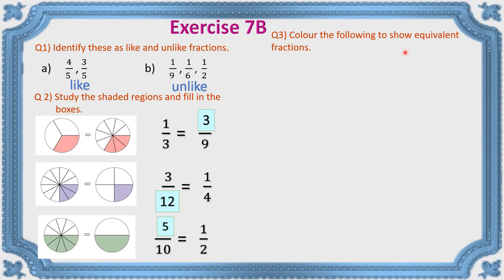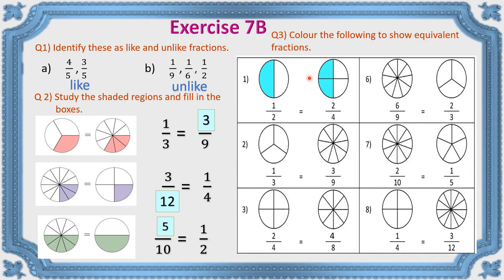Color the following to show equivalent fractions. One-half equals two-fourths — shade half of the first figure and two-fourths of the second to show they are equivalent. For six-ninths equals two-thirds — shade six parts out of nine, and two parts out of three. You can pause the video and draw these in your notebook and do it yourself.